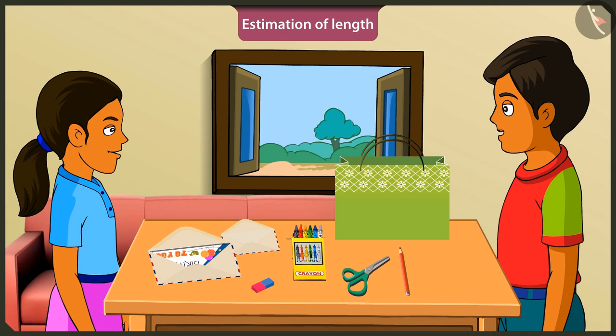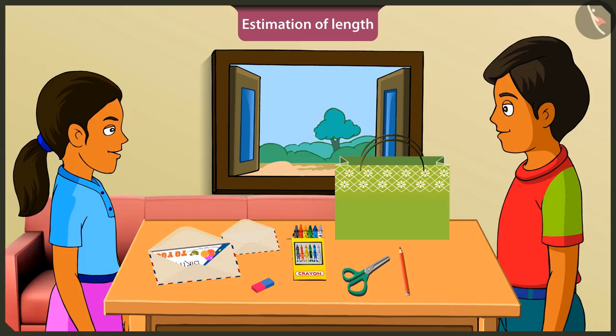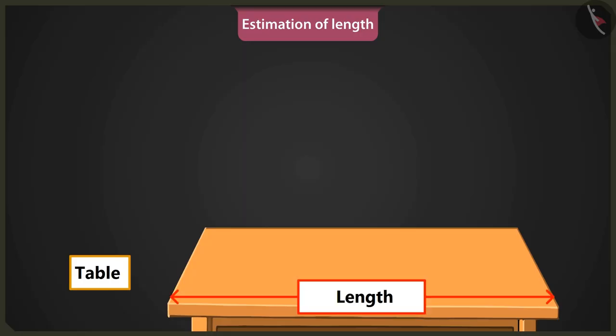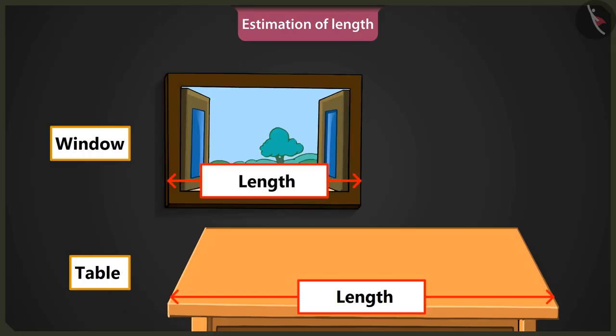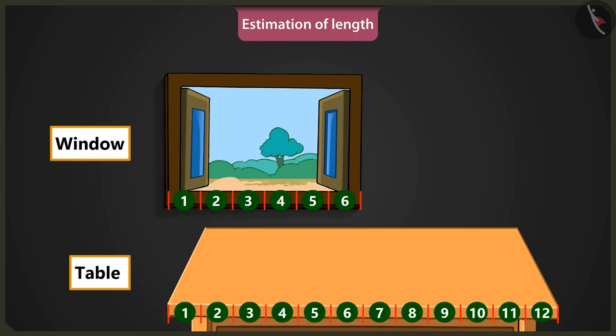Well done, Mintu. Now tell me, what is the estimated length of this table? This table looks longer than the window. The length of the window is six spans of my hand, so this table must be approximately twelve hand spans long.